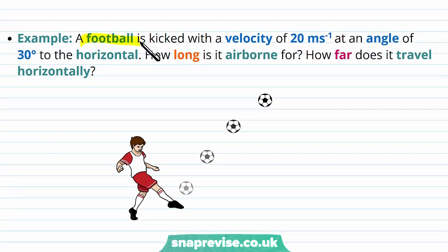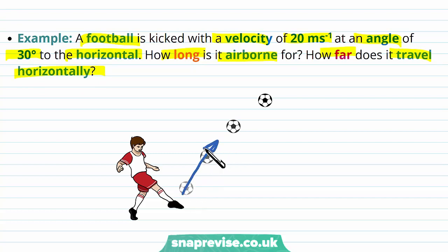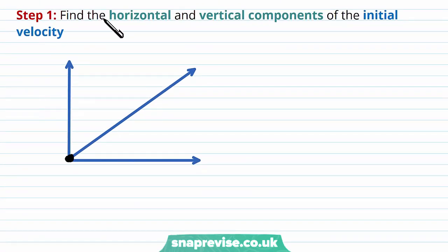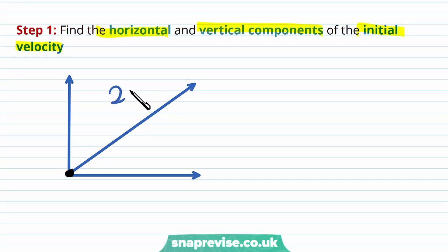A football is kicked with a velocity of 20 meters per second at an angle of 30 degrees to the horizontal. How long is it airborne for, and how far does it travel horizontally? The football is initially kicked at 30 degrees with initial velocity 20 meters per second. Step one is to find the horizontal and vertical components of the initial velocity.